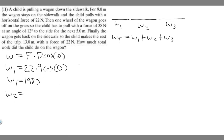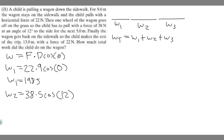For the second part, one wheel of the wagon goes off the grass, so you have to pull with a force of 38 newtons for 5 meters at an angle of 12 degrees. So it's 38 times 5 times the cosine of 12 degrees, which gives you 185.84 — rounding that to 186 joules.